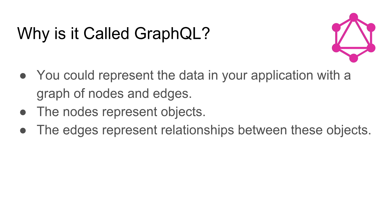So why is it called GraphQL? This is one of the first things that I wondered, but now it makes complete sense. You can represent the data in your application with a graph made up of nodes and edges — the nodes represent objects, the edges represent the relationship between these objects. You can see this in their logo in the top right corner; it's made up of nodes and edges representing the data and the relationships in your application.